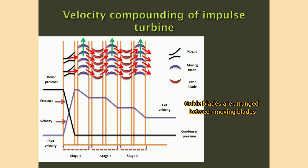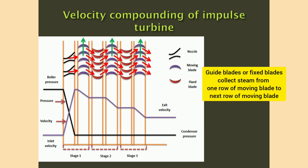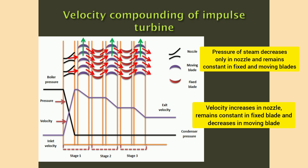The guide blades are arranged between moving blades in reverse manner. They collect the steam coming out of the moving blades and direct it to the next row of moving blades. When steam passes through the fixed blades, there is no change in pressure or velocity of steam, since the blades are symmetrical with no area variation. When steam passes through the moving blades, kinetic energy of steam is absorbed and the rotor rotates. The direction of blade rotation is shown in green. Here, velocity of steam decreases but pressure remains constant.